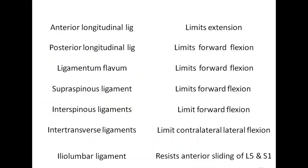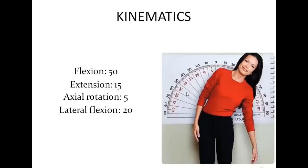The vertebrae also have transverse processes. Between each transverse process, we have the intertransverse ligament, which keeps check mainly over the rotatory and side flexion movements of the spine. To summarize the ligaments: the anterior longitudinal ligament limits extension; the posterior longitudinal ligament limits flexion; the ligamentum flavum limits forward flexion; the supraspinous and interspinous ligaments limit forward flexion; and the intertransverse ligament limits contralateral side flexion and rotation.